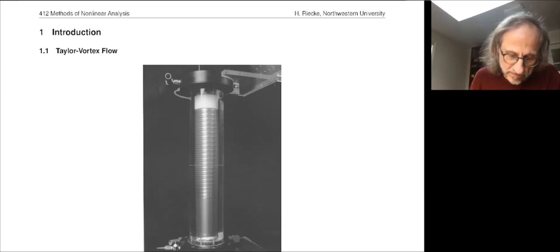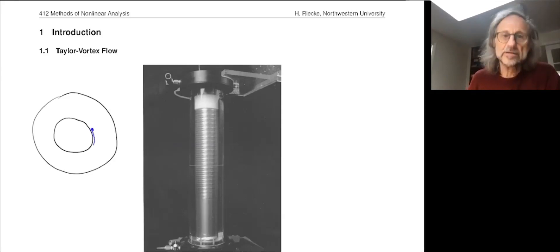So this would be an inner cylinder and outer cylinder. Between these two cylinders is a fluid, and the inner cylinder is rotating. As it's rotating, it drags along the fluid, whereas the outer cylinder is not rotating or rotating more slowly, and so therefore the fluid out there is rotating more slowly.